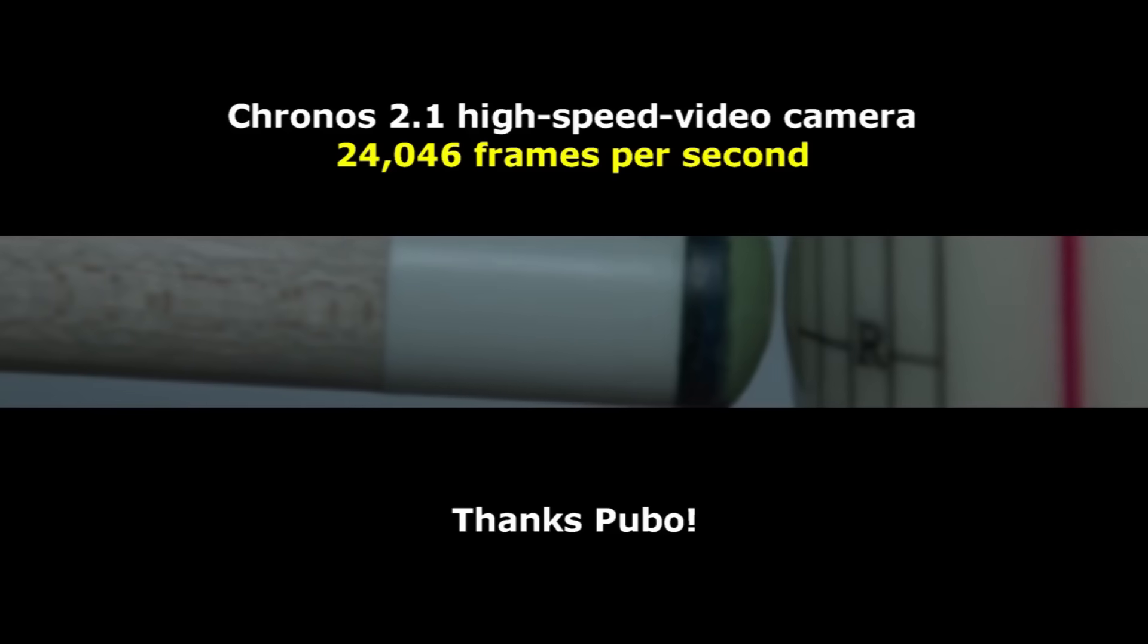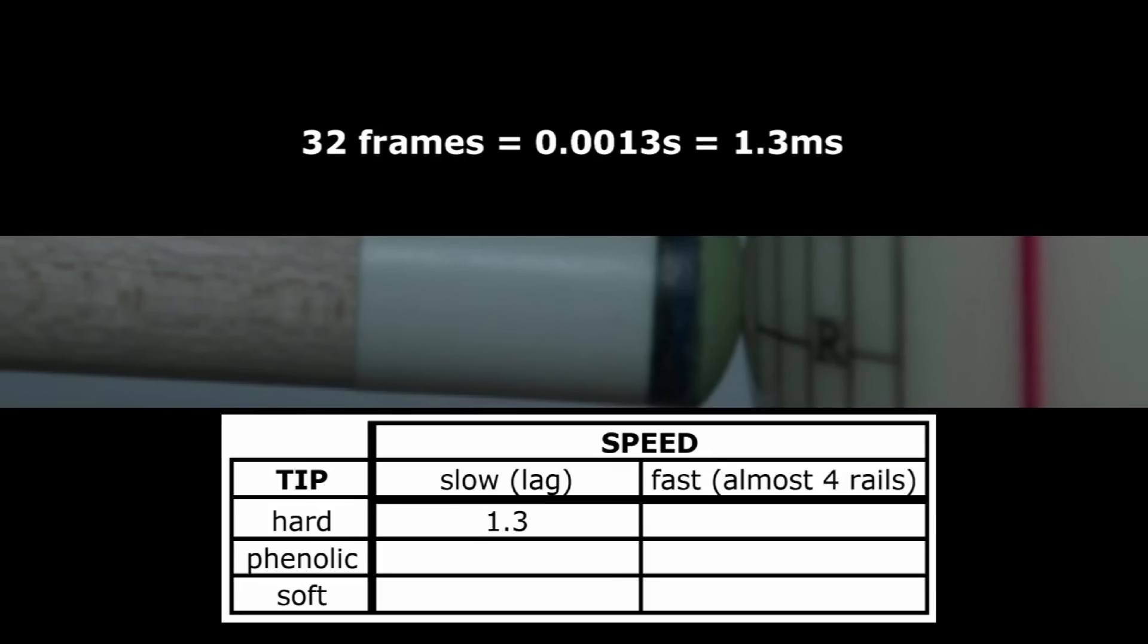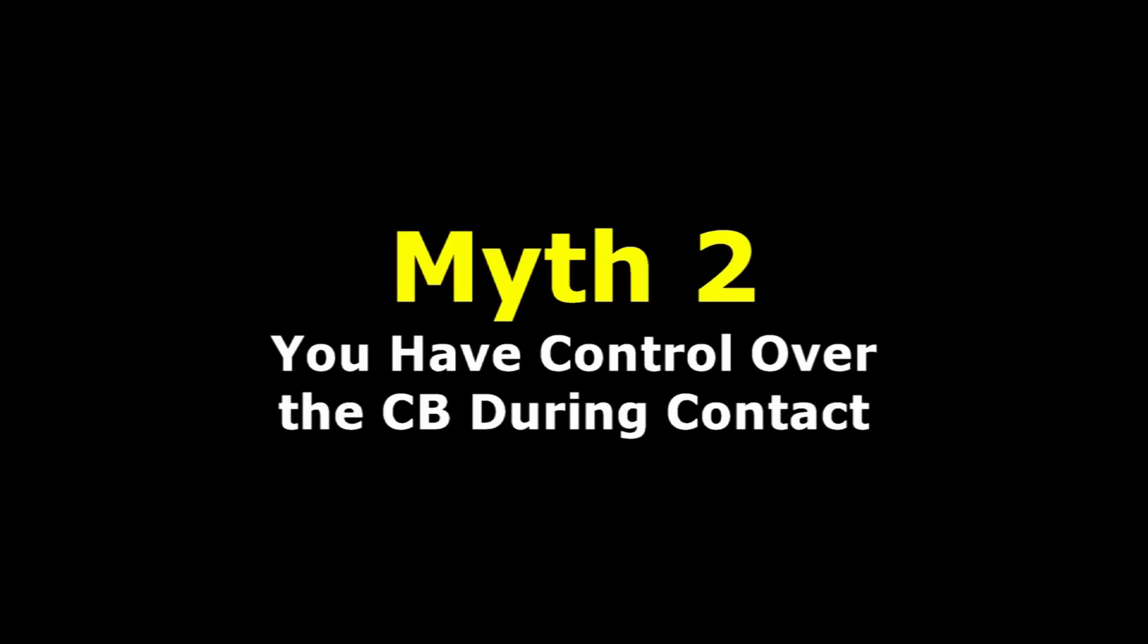Here is some recent high-speed video camera footage from Pubo Huang filmed at 24,000 frames per second. Regardless of how a hit might feel, the cue tip is in contact with the cue ball only for a minuscule amount of time. For this playing cue with a hard leather tip at lag shot speed, the tip contact time is only about a thousandth of a second.